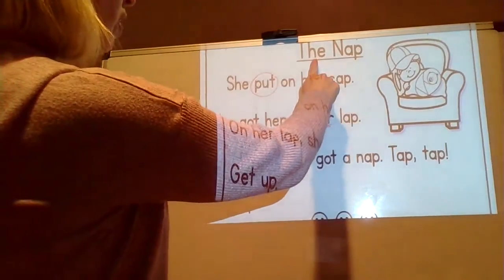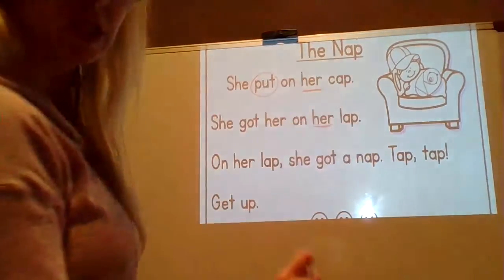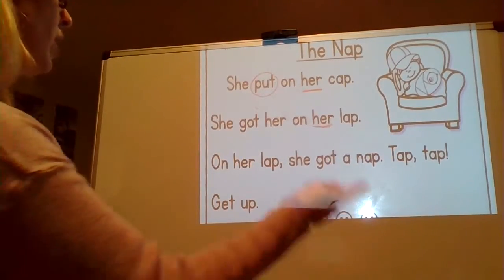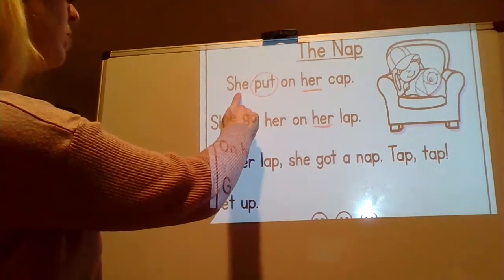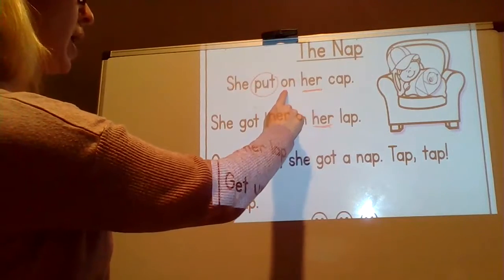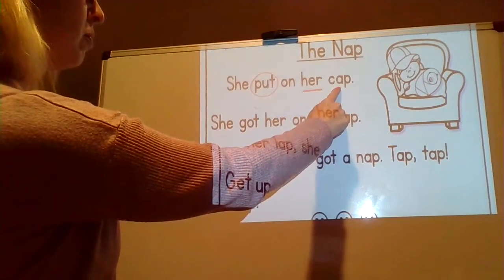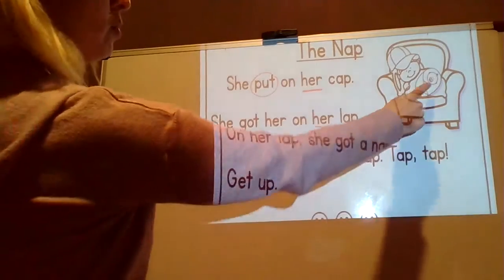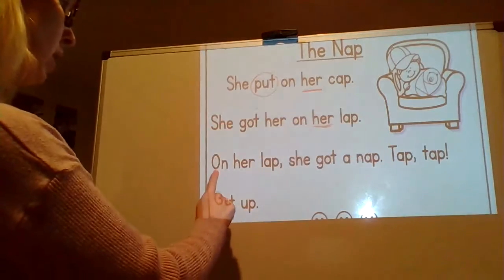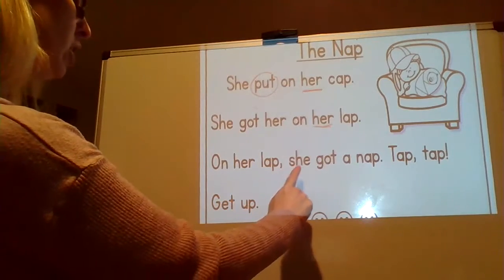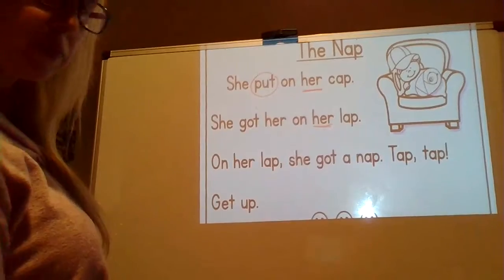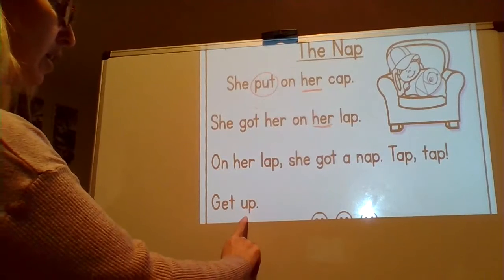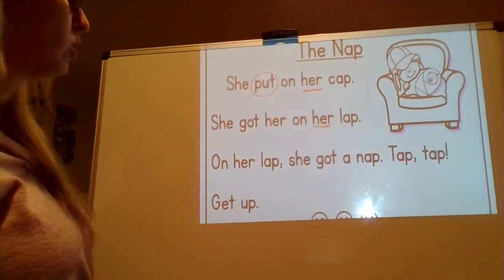Let's go ahead and start with the title. The Nap. What is the title? The Nap. So our passage must be about the nap. Let's go ahead and read. Remember, 'she' is our new sight word. She put on her cap. She got her baby on her lap. On her lap, she got a nap. Tap, tap. Get up. Okay, your turn. I want you to read the passage on your own now. Pause the video if you need to.